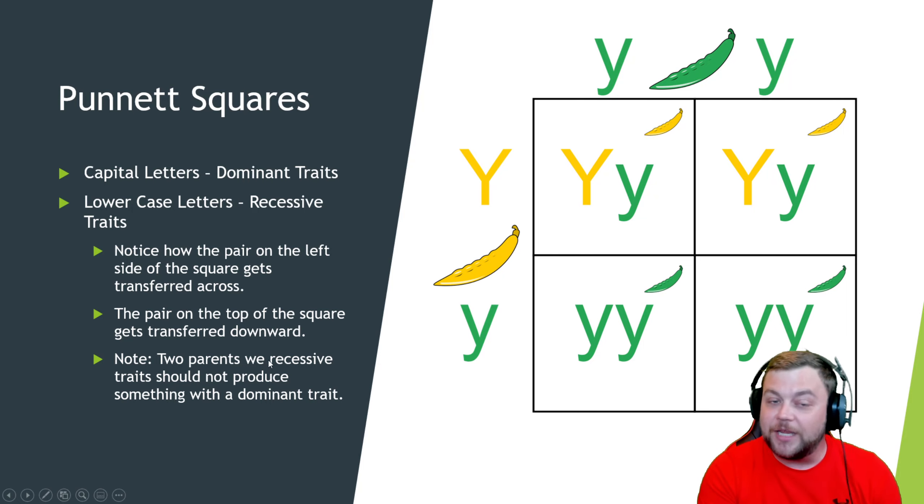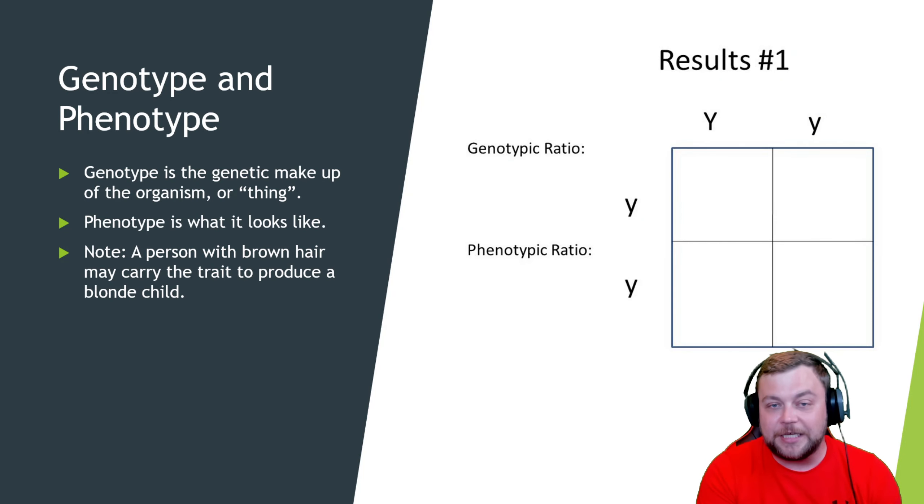Two parents with recessive traits should not produce something with a dominant trait. I will say that there are some anomalies in science where this does occur - some mutations where this occurs. That's where things get very interesting when it comes to genetics. These Punnett squares, the history of them is actually really fascinating. You have to have a lot of patience to do this type of experiment. Take a look, study these.